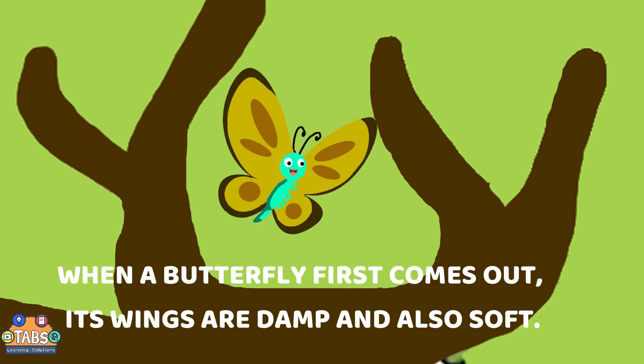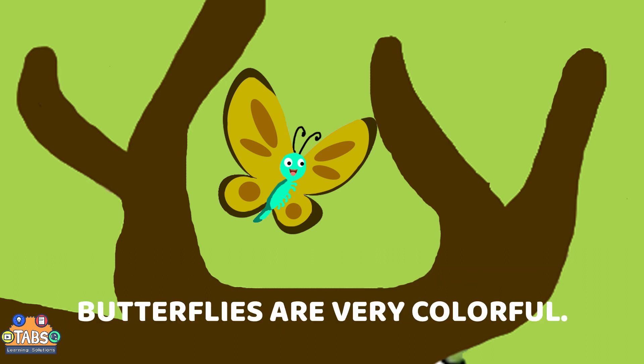When a butterfly first comes out, its wings are damp and also soft. Butterflies are very colorful.